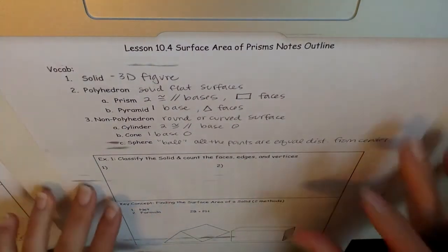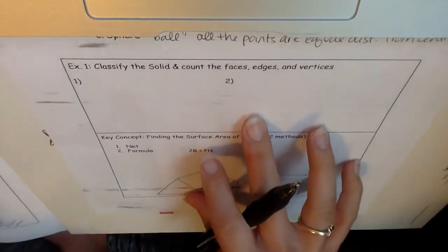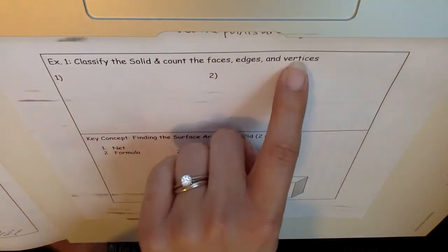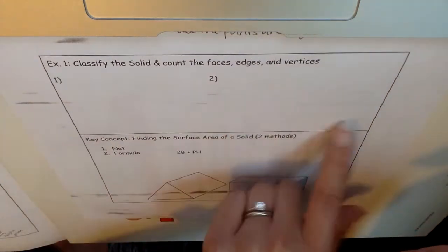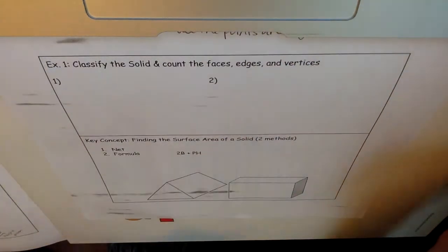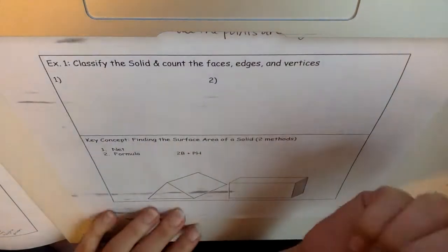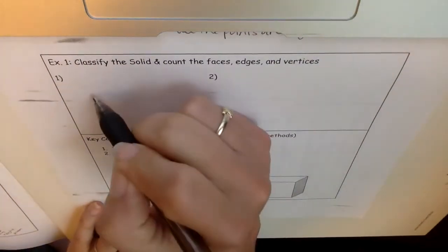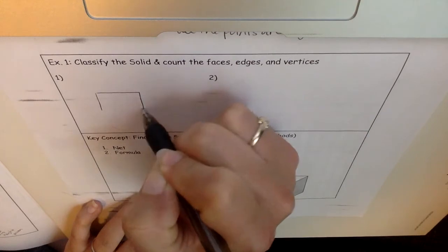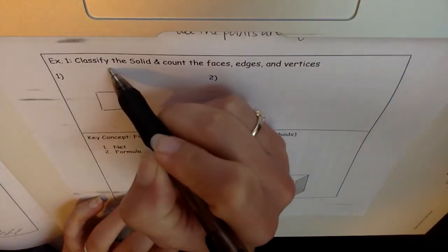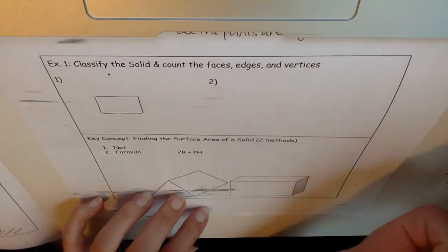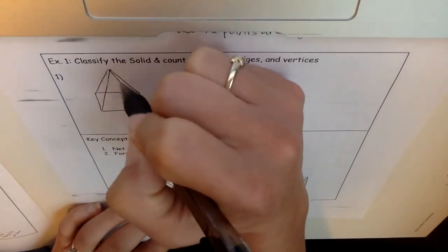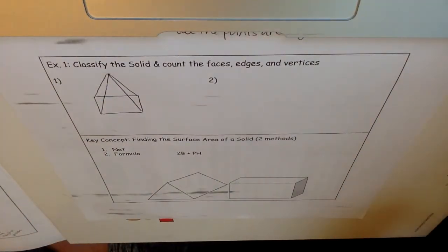Let's get into some examples. Example one: classify the solid and count the faces, edges, and vertices. I couldn't figure out how to use my computer to create these shapes, so we're going to draw them. You're going to draw a rectangle, put a point at the top, and connect all the corners of your rectangle to make a pyramid. So we have a pyramid.